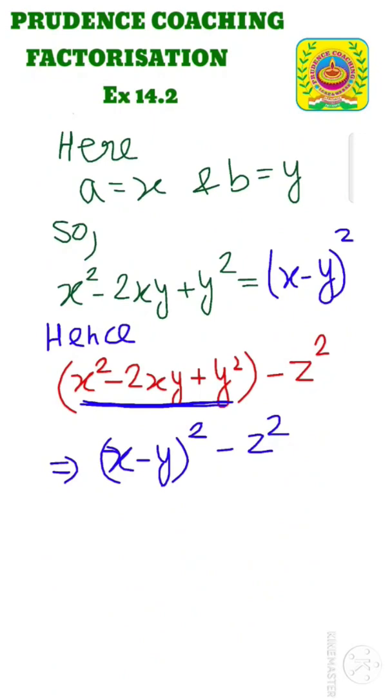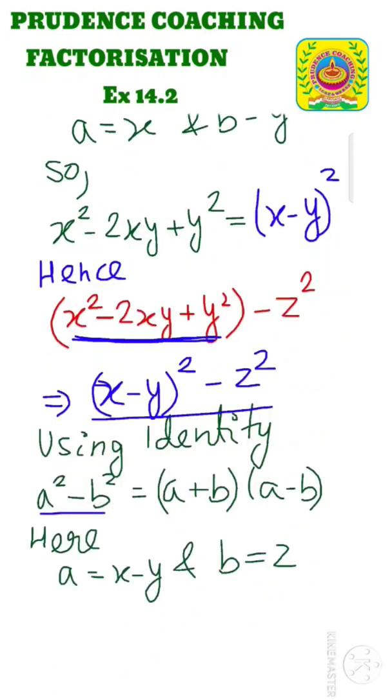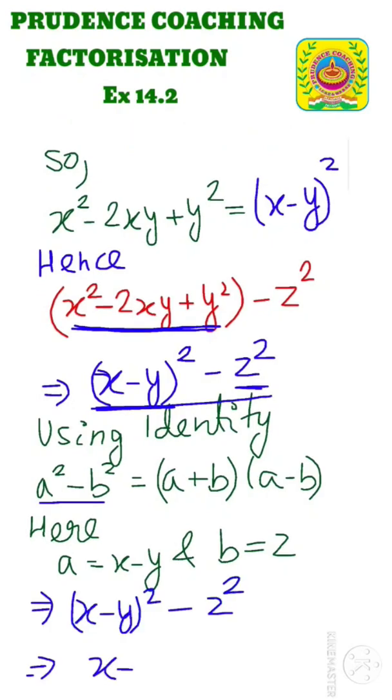Now if we look at this expression, we can compare with the identity a² - b², where a = (x - y) and b = z. So we can write it as (a + b)(a - b). Here a is (x - y) plus b that is z once, and another time (x - y) that is a minus b, that is minus z.